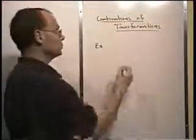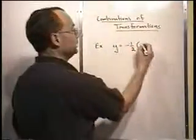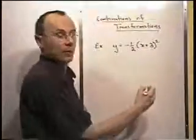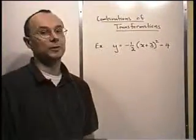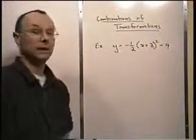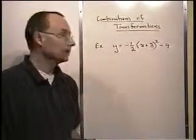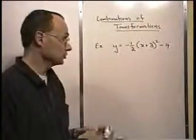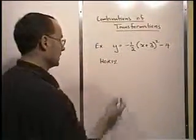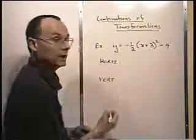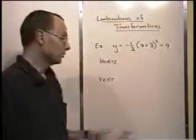In this first example, we're going to graph the function y equals negative one-half times x plus three squared minus four. There are multiple approaches to doing these kinds of graphs. Probably back in grade 11 you learned to directly graph these and do some of the shifts. I'm going to encourage a slightly different approach: first decide what are the horizontal transformations and what are the vertical transformations.